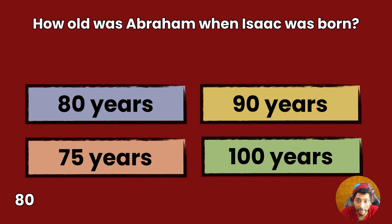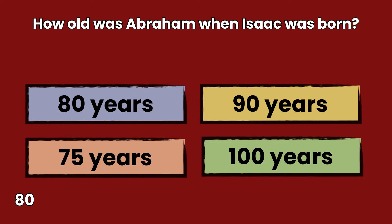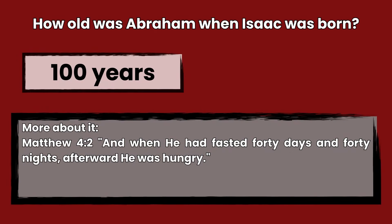Question 80: How old was Abraham when Isaac was born? 80 years, 90 years, 75 years, or 100 years? Answer: 100 years. Genesis 21 — Abraham was 100 years old when Isaac was born.